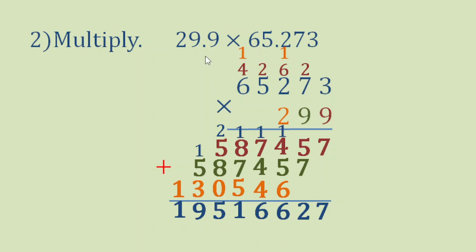Now how about the decimal point? So let's look at our original numbers. 29.9 has 1 decimal place, and 65.273 has 3 decimal places. So we add 1 plus 3 is 4. So we have to say our answer here has 4 decimal places, and the decimal should be here. So our answer is 1951.6627.